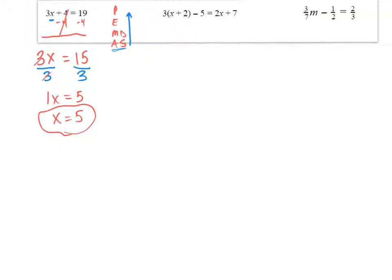We can always check to see if this is correct by taking 5 and plugging it back in. If I plug 5 back into the equation, I better get an equality that holds. 3 times 5 is 15, plus 4. Is that equal to 19? It is. So this is just a quick check. I found the solution.